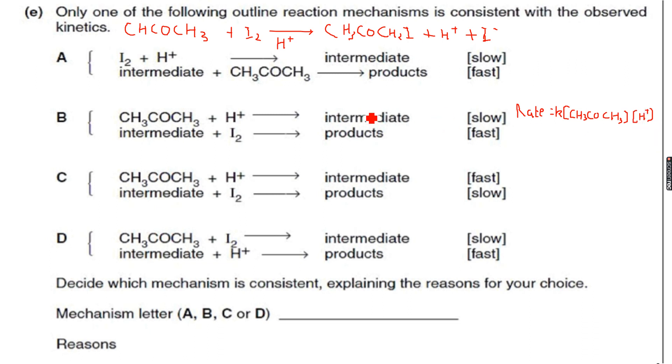Both raised to the power of 1. Now, what is intriguing over here, is that even though I2 is a reactant, and H plus is just a catalyst, not a reactant, we do not have I2 in the rate equation, but we have H plus in the rate equation. H plus is just a catalyst, and we still have it in the rate equation.